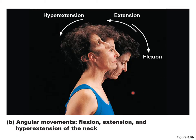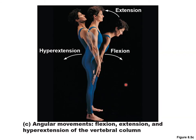You can see flexion, extension, and hyperextension of the neck: the neck goes down, you decrease the angle — that's flexion; goes up — extension; beyond anatomical position — hyperextension. This is also shown for the vertebral column: you bend your body — flexion; you extend; you can hyperextend. Flexion and extension are also demonstrated at the shoulder and knee — your arm goes up is flexion, goes down is extension.